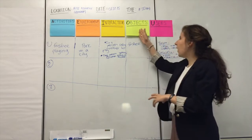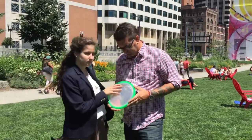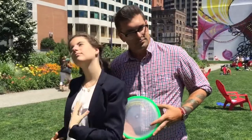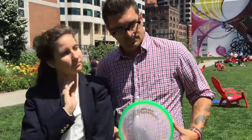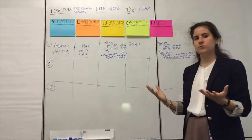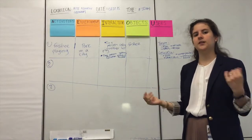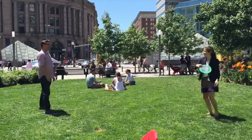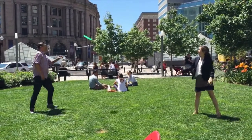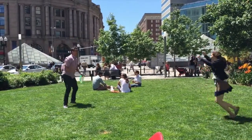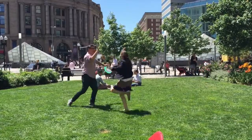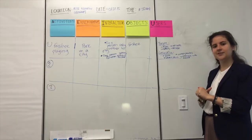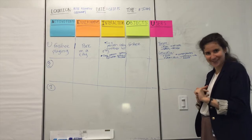Then you move on to objects. The clear object here is we observed a frisbee. And then users — who are the users? Who are you observing? We saw a guy named Jason, and you can jot down some descriptions about him. And we saw a girl named Graciela, and you can jot some descriptions about her, like her creepy smile and her obsession with herself.